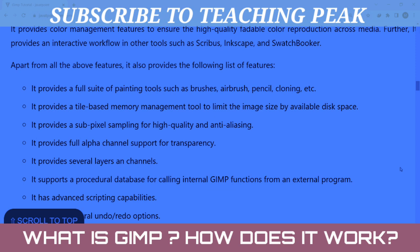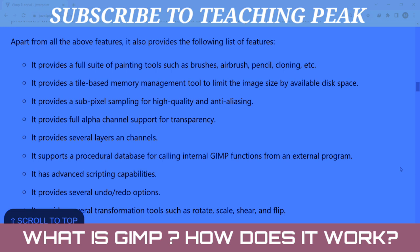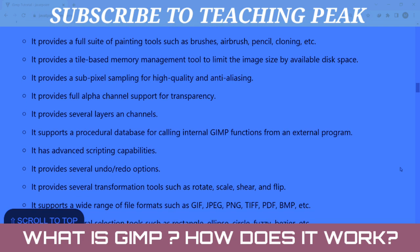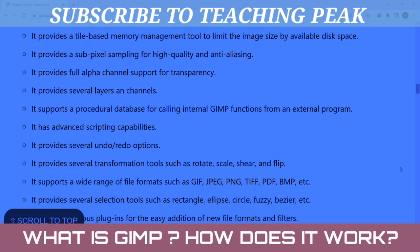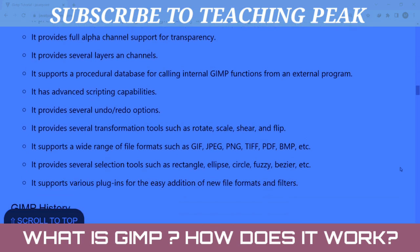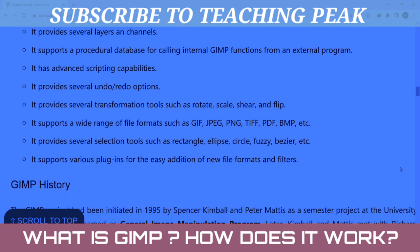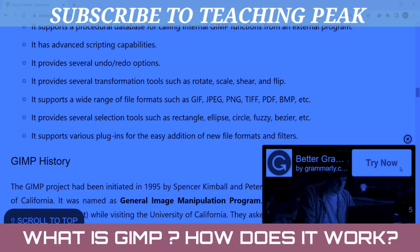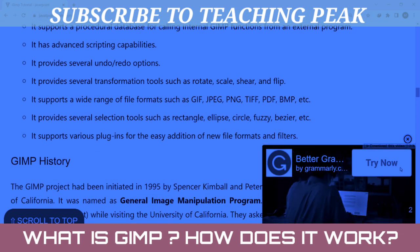Apart from all the above features, GIMP also provides the following: a full suite of painting tools such as brushes, airbrush, pencil, and cloning. It provides a tile-based memory management tool to limit the image size. It provides sub-pixel sampling for high quality anti-aliasing. It provides full alpha channel support for transparency. It provides several layers and channels. It supports a procedural database for calling internal GIMP functions from an external program. It has advanced scripting capabilities and provides several undo and redo options.